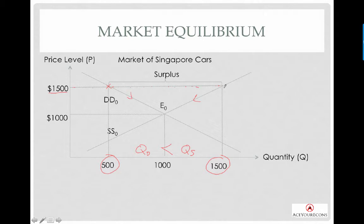Consider this scenario. At $1,500 and 1,500 cars, the producers are having a lot of excess inventories. They overproduce. But your consumers...